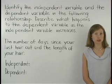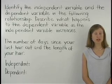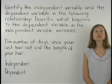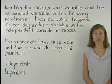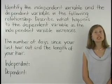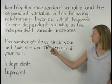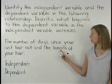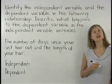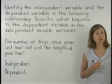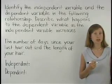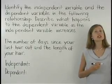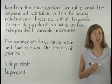A dependency relationship is a relationship in which one variable depends on the other variable. The relationship described here — the number of days since your last haircut and the length of your hair — is an example of a dependency relationship because the length of your hair depends on the number of days since your last haircut.